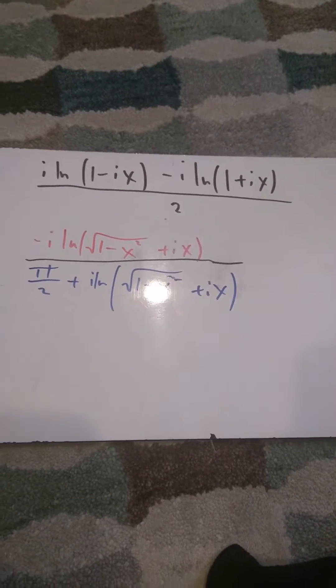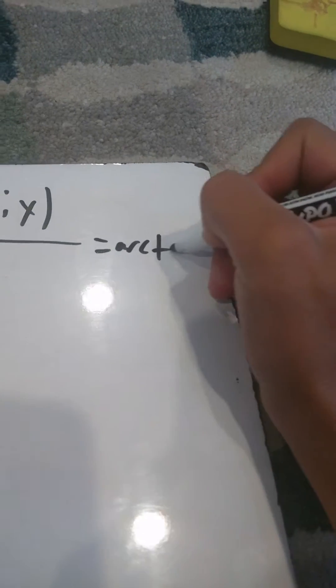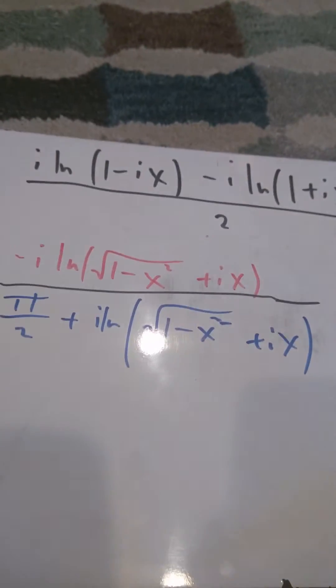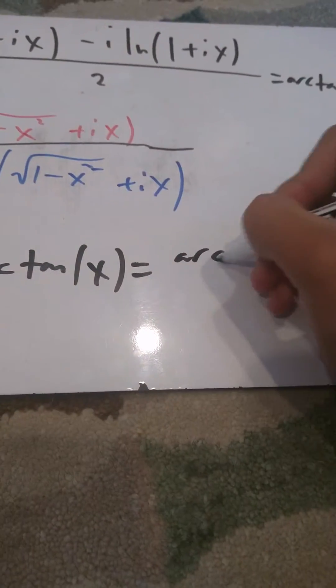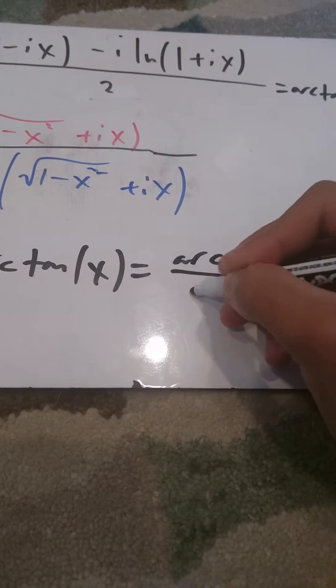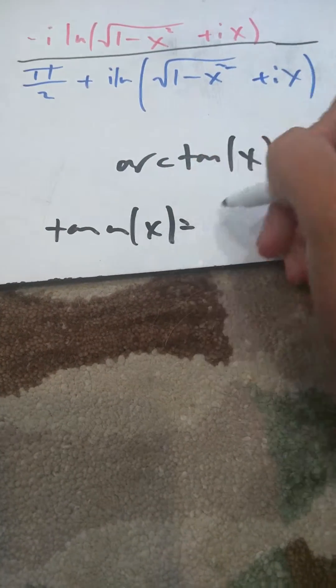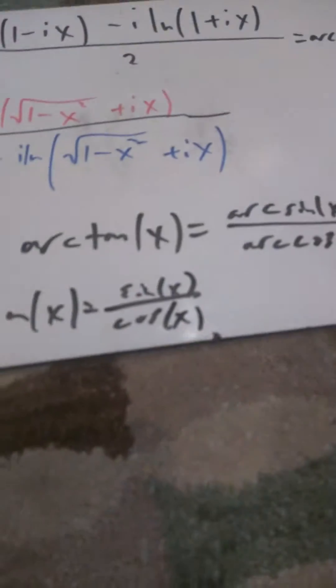Finding the arc tangent of a complex number. Right here we have the formula for the arc tangent of x. We have arc tangent of x equals arc sine over arc cosine, just like tangent of x equals sine x over cosine of x. So here we have the formula.